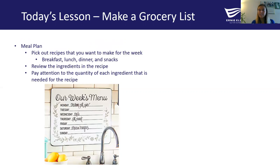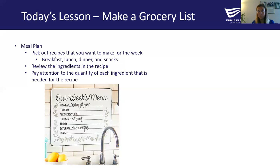Another idea is to meal plan and decide what recipes you're going to make throughout the week, and then look at those recipes and review the ingredients. The recipes you'll be looking for are things for breakfast, lunch, dinner, and what kind of snacks you would want to eat for the week. When you're making your list, you want to pay attention to the quantity of each ingredient that you'll need for the recipe.